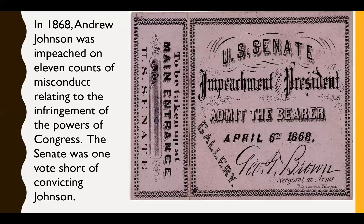Next time we'll talk about the continuation of Radical Reconstruction and the ways Republicans in Congress tried to assist African Americans with the rights and freedoms they deserved. We'll also discuss how whites in the South resisted these changes violently — including the introduction of the Ku Klux Klan and other methods used to stop African Americans from voting.